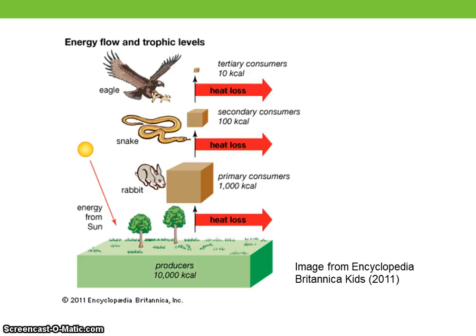Guilds are groups of species that exploit a common resource in a similar fashion, and there is potential for strong interactions between the members. Examples would be nectar-feeding or seed-eating birds. The functional type defines a group of species based on their common response in the environment.